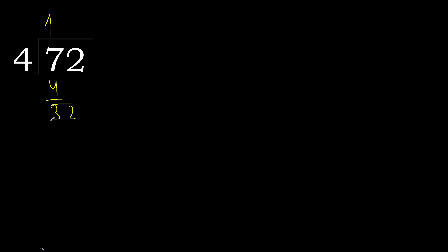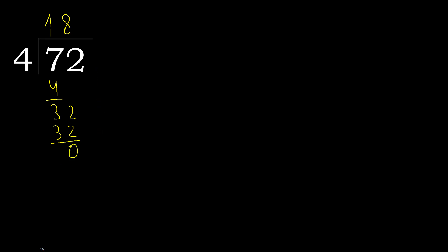Next: 32. 4 multiplied by 8 is 32 — not greater. 32 minus 32 is 0. There is no number remaining, therefore finish it: 72 divided by 4 is 18.